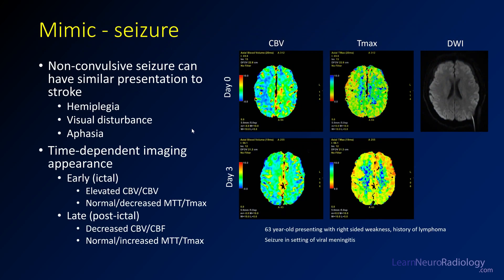Seizure, particularly non-convulsive seizures, can present with hemiplegia, visual disturbances, or aphasia. The imaging of seizure is time-dependent. In the early ictal phase — either during or right after the seizure — there's usually increased blood flow and increased blood volume. The time parameters MTT and Tmax are usually normal or maybe slightly decreased because of the increased blood flow.